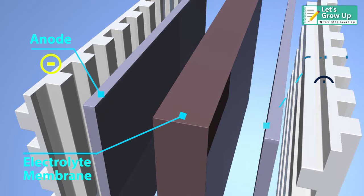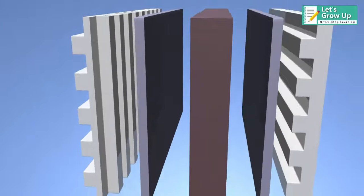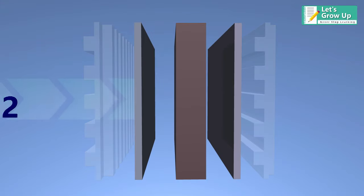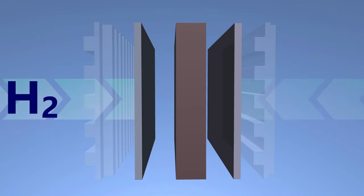One plate is called the anode and the other is the cathode. Hydrogen is passed through the anode while oxygen is passed through the cathode.